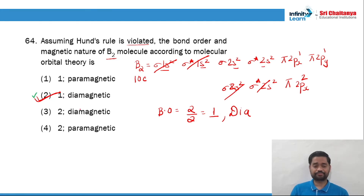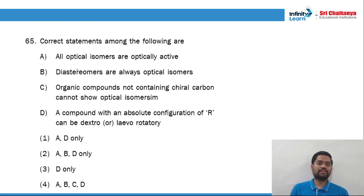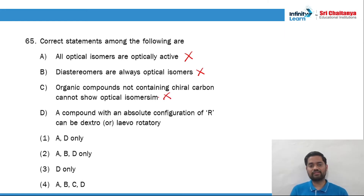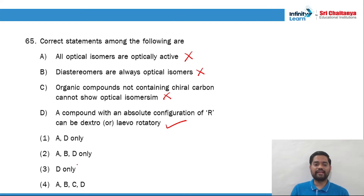Question 65: correct statements among the following. 'All optical isomers are optically active' — wrong. 'Diastereomers are always optically active' — wrong. Meso compounds are not optically active. 'Organic compound not containing a chiral carbon cannot show optical isomerism' — wrong, they can. 'A compound with absolute configuration R can be dextro or levo' — this is right. Hence the right option is option number 3.